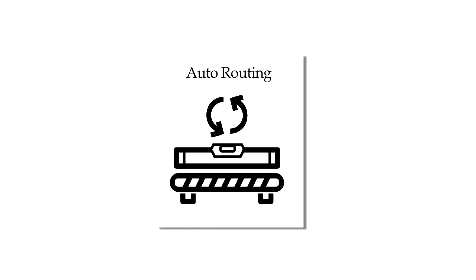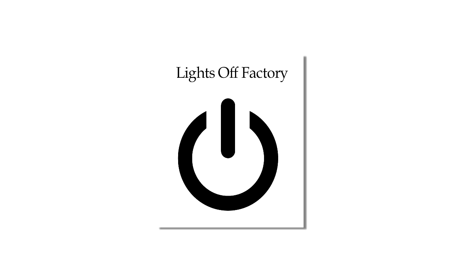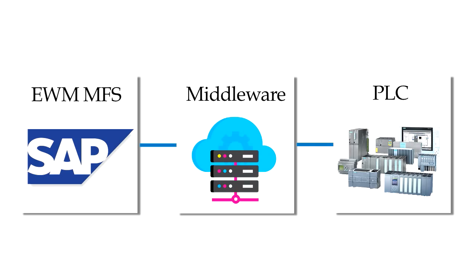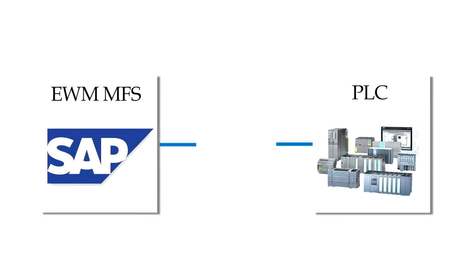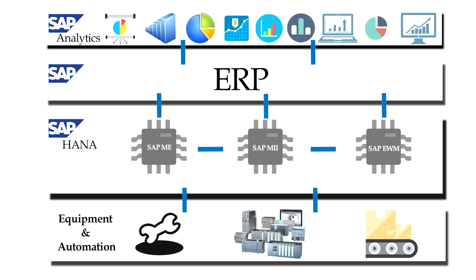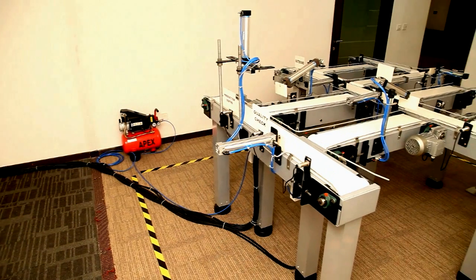In Stellium digital factory, EWM MFS is directly integrated with PLC, eliminating costly middleware, thereby reducing total cost of ownership. EWM connects directly with enterprise-level SAP ERP software and machine-level PLC to enable seamless flow of information in the organization, thereby providing real-time visibility and transparency.